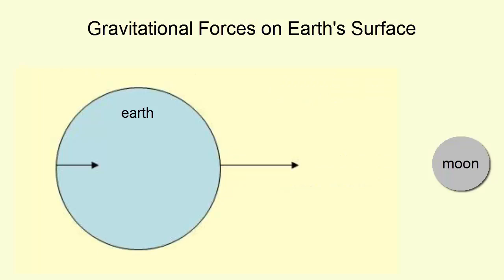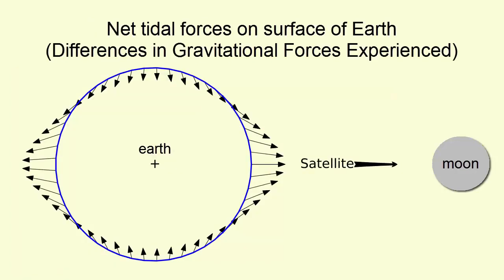The force of gravity on the closer side to the Moon thus feels a stronger gravitational force than the other. If we take the medium-sized gravitational force between Earth and Moon experienced at the center of the Earth and subtract it from all the other force arrows found around the planet, we get this image, which shows the net tidal forces experienced on all points of Earth's surface as a result of varying gravitational forces, strength and direction.